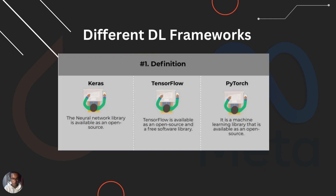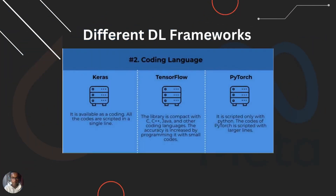In terms of coding language, Keras code is scripted concisely in single lines. For TensorFlow, the library is compatible with C, C++, Java, and other coding languages, and accuracy is increased by programming it with small code units. PyTorch is scripted only with Python, and the code is written in larger lines.